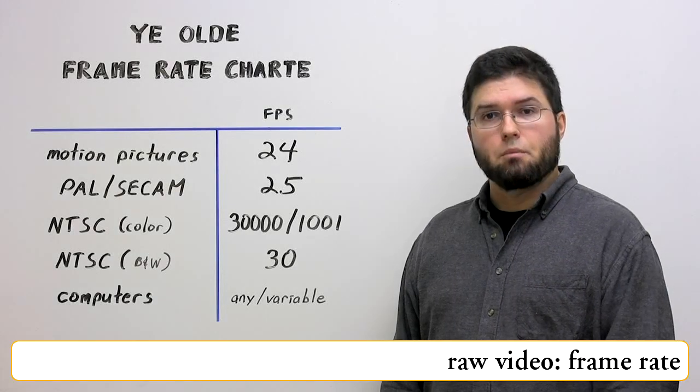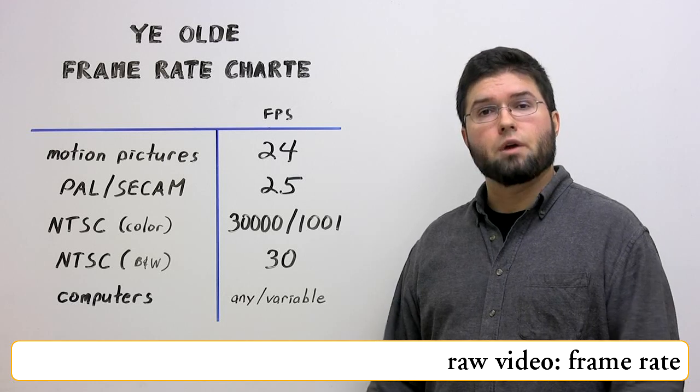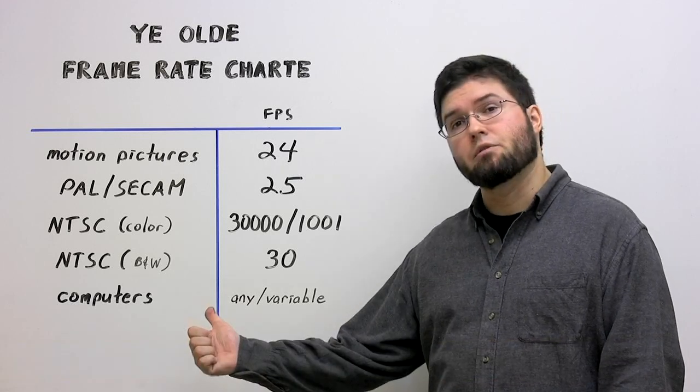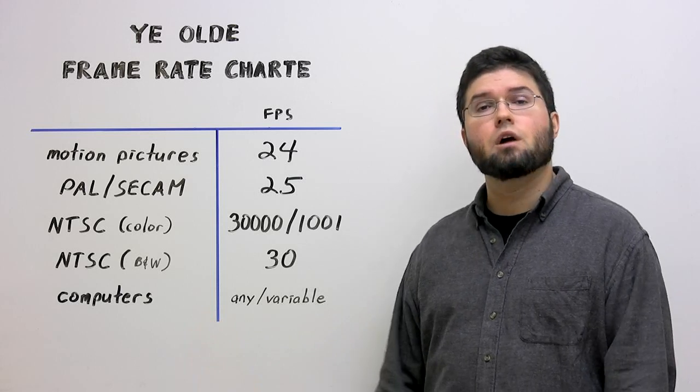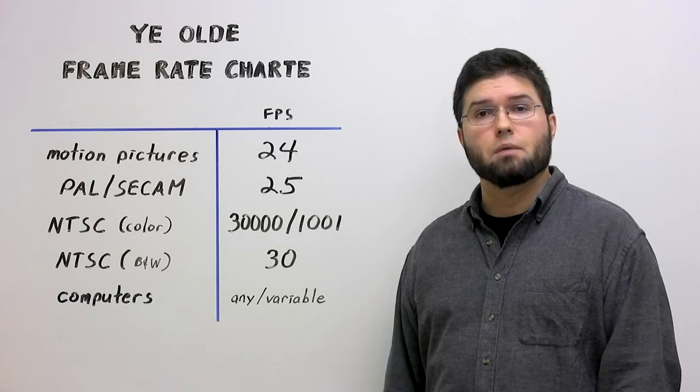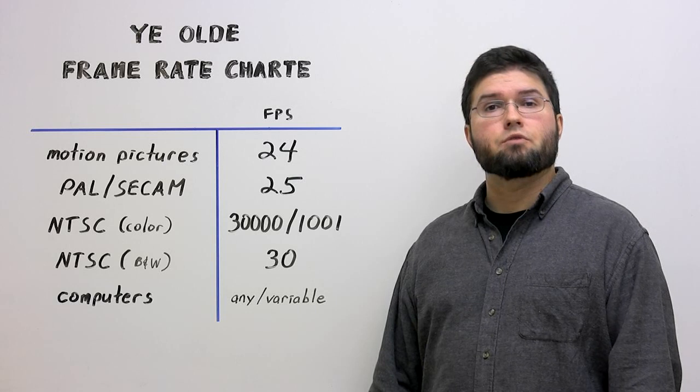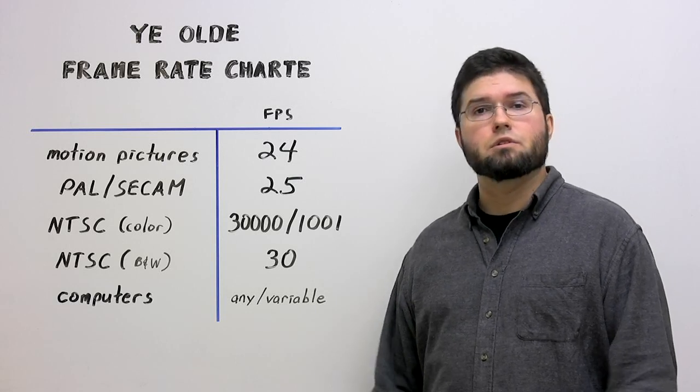The second obvious video parameter is the frame rate, the number of full frames per second. Several standard frame rates are in active use. Digital video, in one form or another, can use all of them. Or any other frame rate. Or even variable rates, where the frame rate changes adaptively over the course of the video. The higher the frame rate, the smoother the motion. And that brings us, unfortunately, to interlacing.